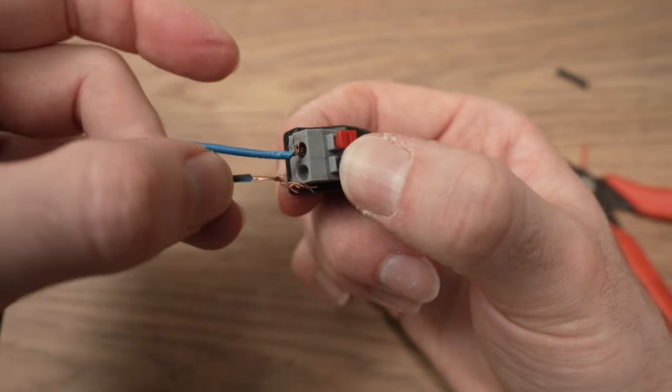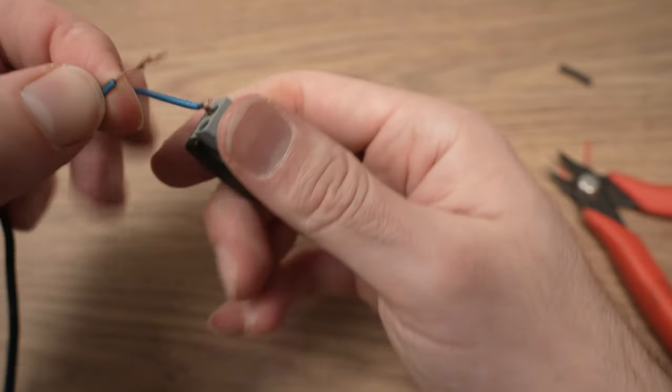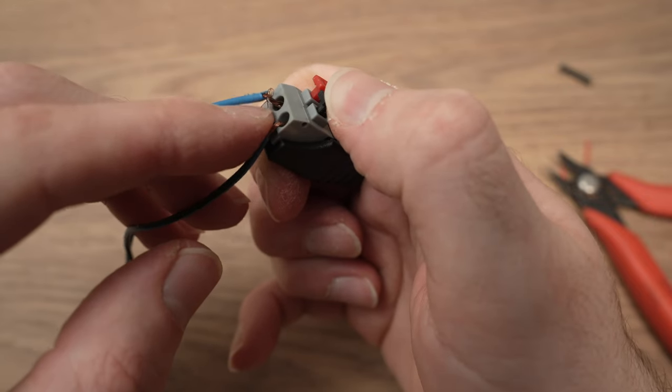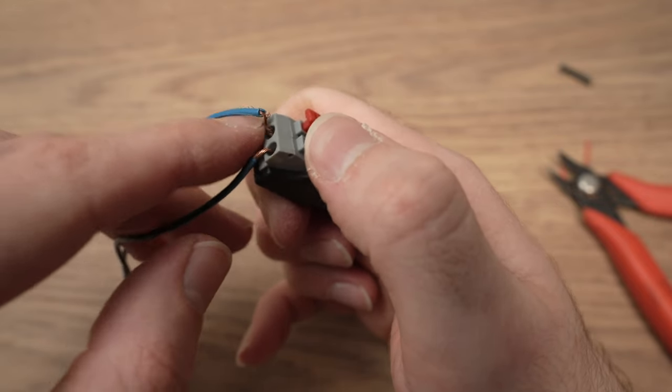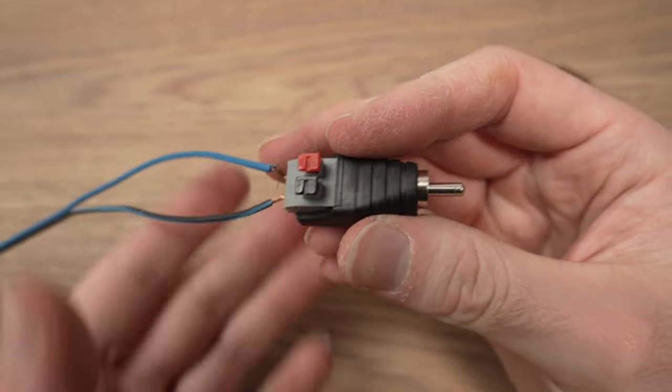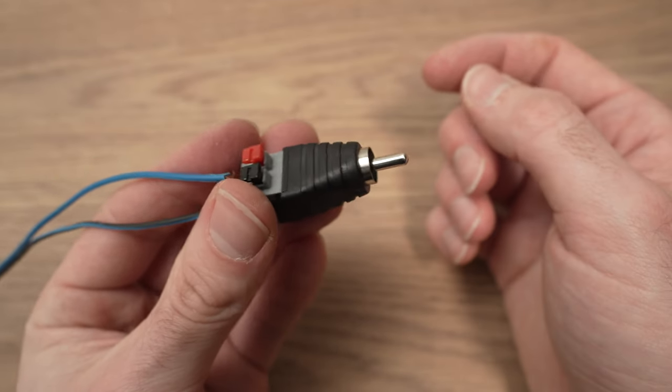Do the same for the negative one. You just have to twist it to make sure it fits like this. Make sure that the cables here are not touching. They're separated and you're done. You just transform your speaker's cable into an RCA cable and then you can just plug it.